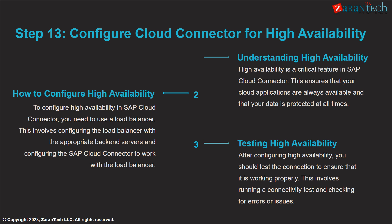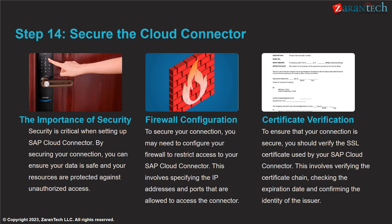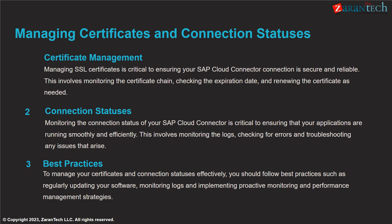High availability ensures your cloud apps are always accessible. Configure a load balancer with back-end cloud connector servers. Test failover to validate high availability is working properly. Secure your cloud connector by restricting firewall access and verifying SSL certificates. This protects your resources from unauthorized access and data breaches.